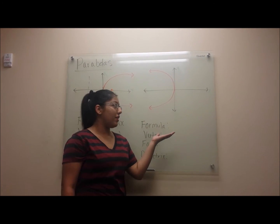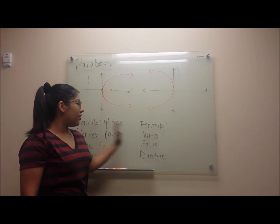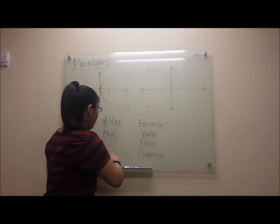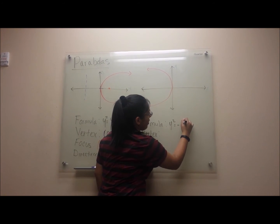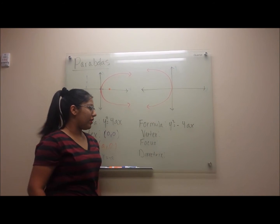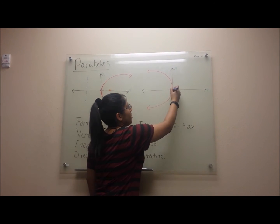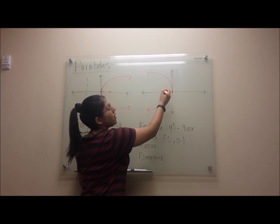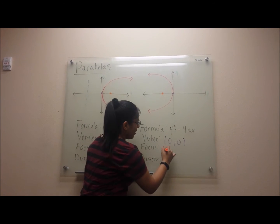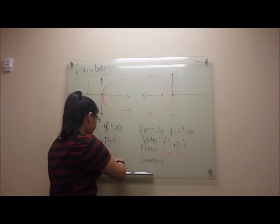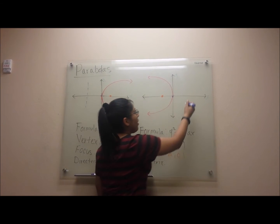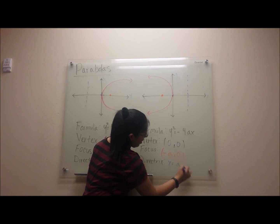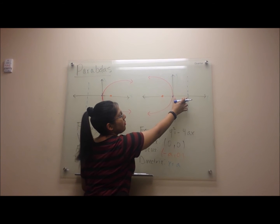Now let's see the one that opens on the negative side. The components are almost the same except with a few negatives as a difference. The formula is y squared equals negative 4ax, since it opens on the negative side. The vertex is still at the origin, 0, 0. Our focus is now on the negative side of the x-axis, so our focus is negative a, 0. And our directrix is now on the positive side of the x-axis, which makes it x equals a. The same distance from here will be the same distance from here.